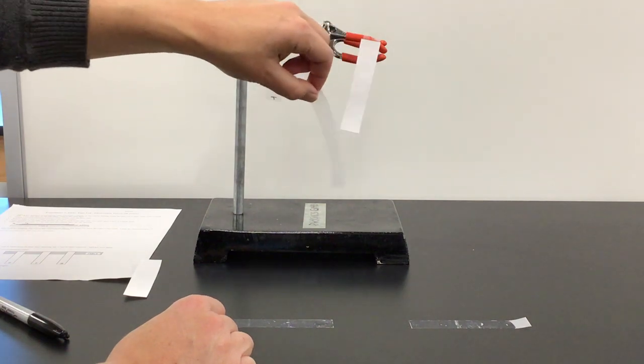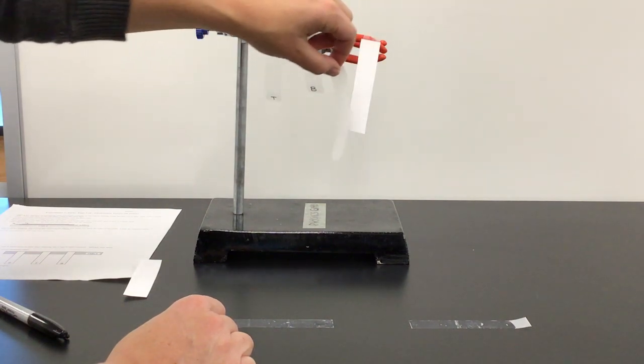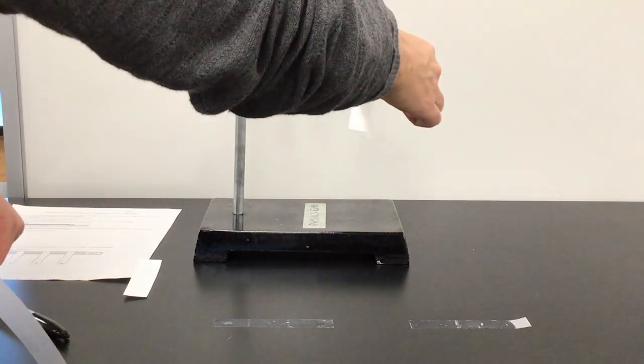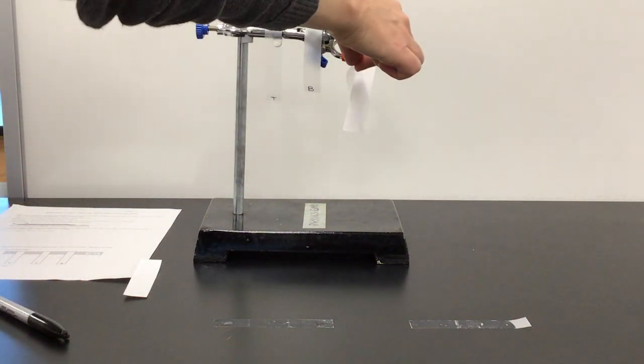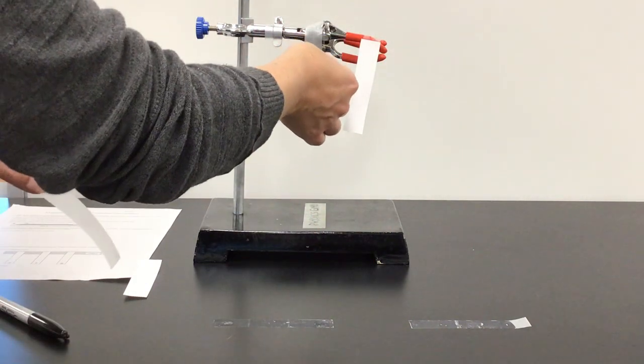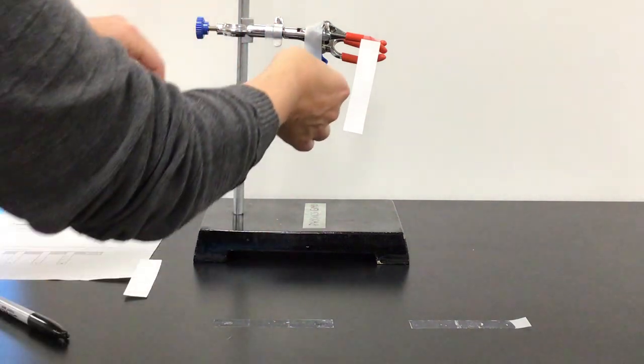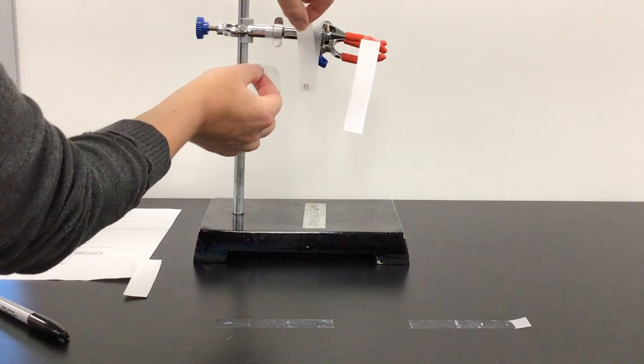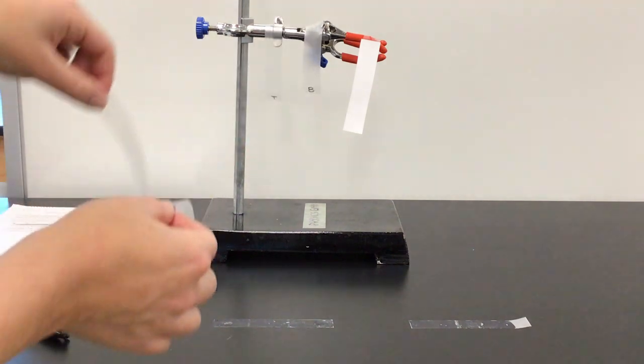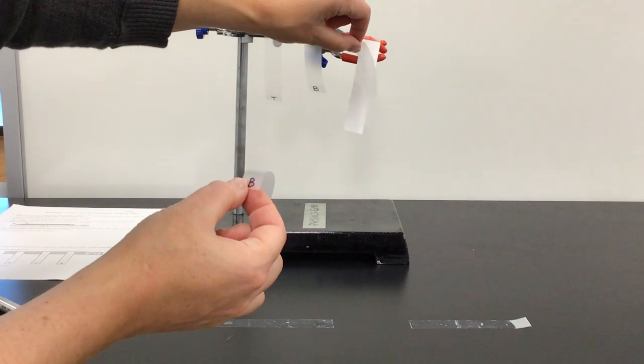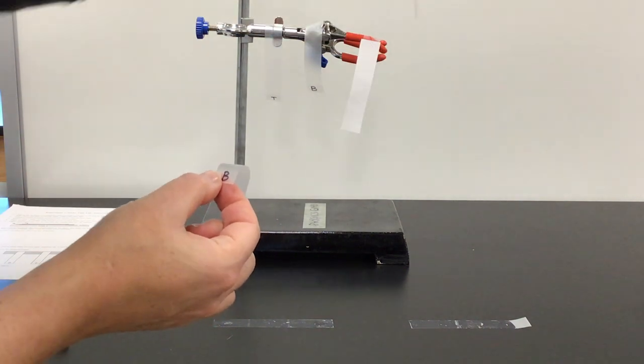The top tape also attracts the paper. The bottom tape attracts the paper. So it appears to me that likes repel—the two tops repel, the two bottoms repel. Opposites attract. Here I've got a top and a bottom and a top and a bottom, they attract. And both the top tape and the bottom tape attract the paper.